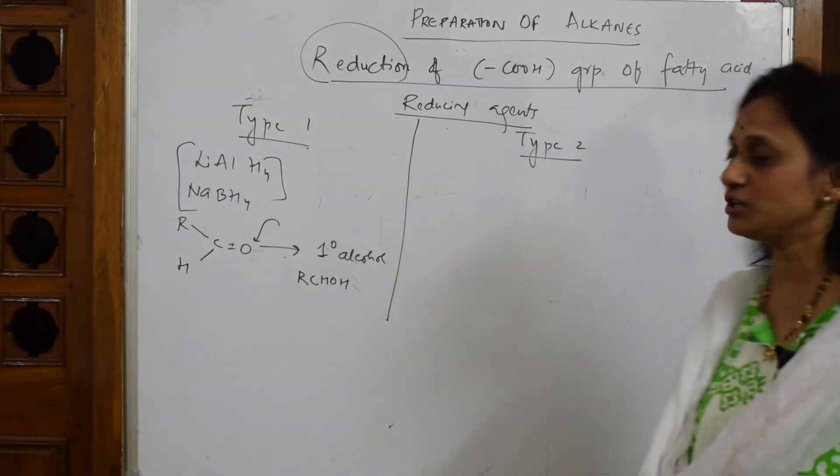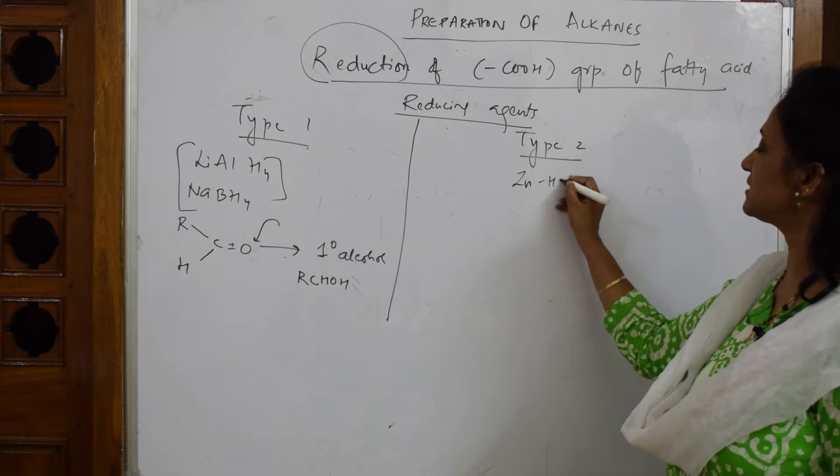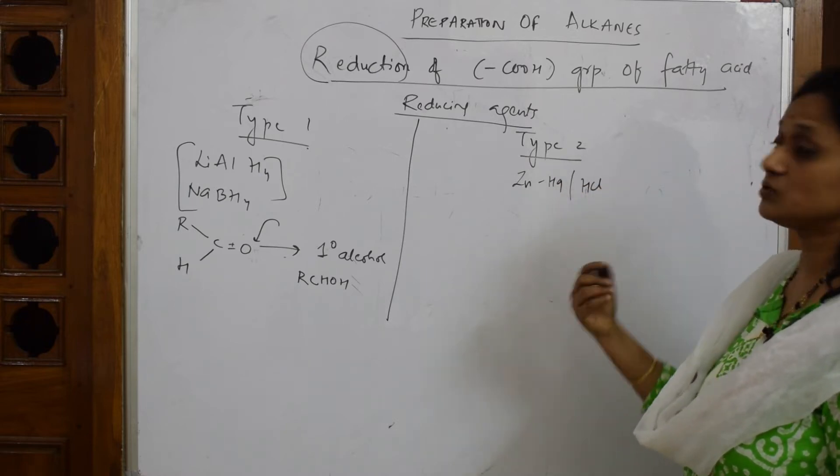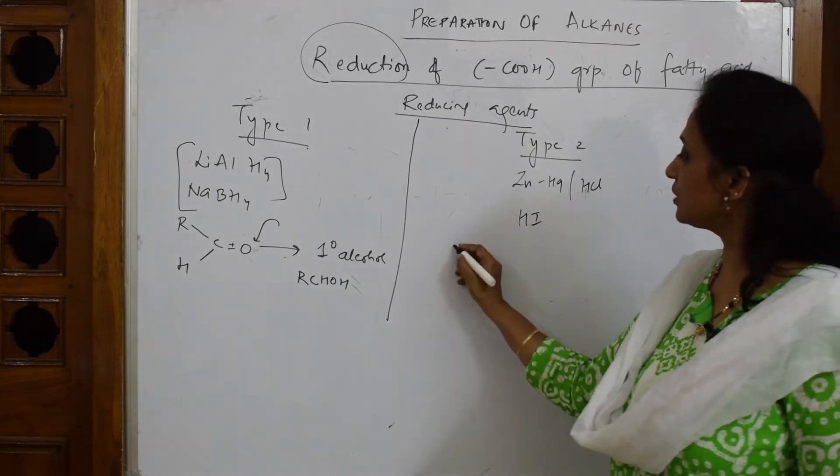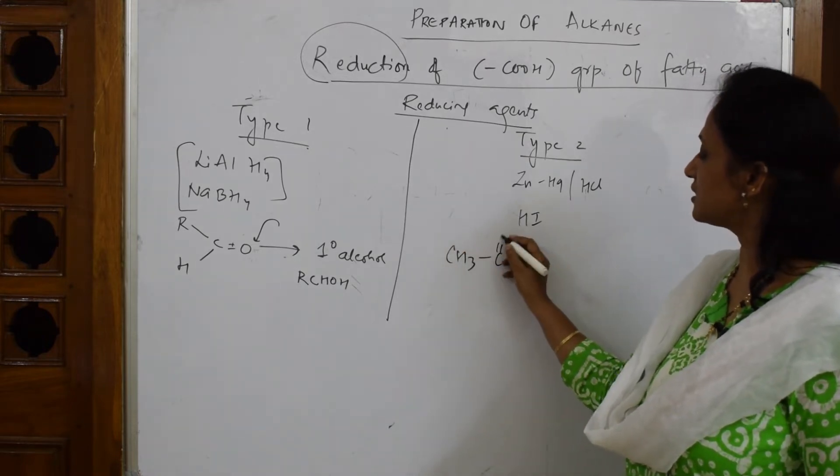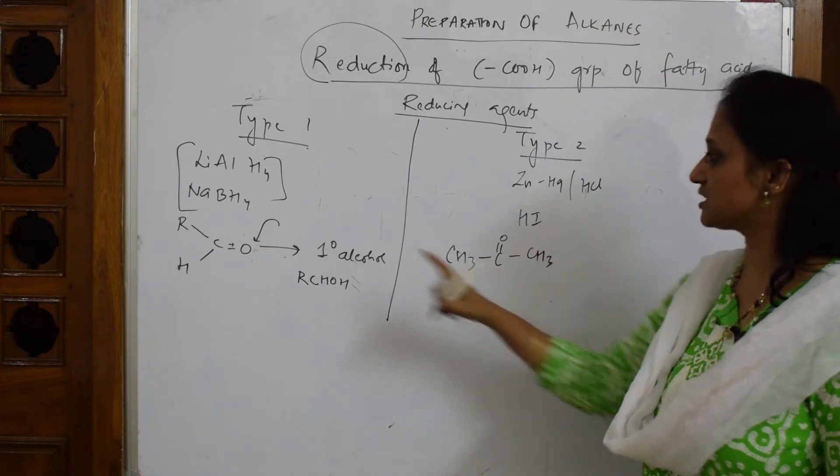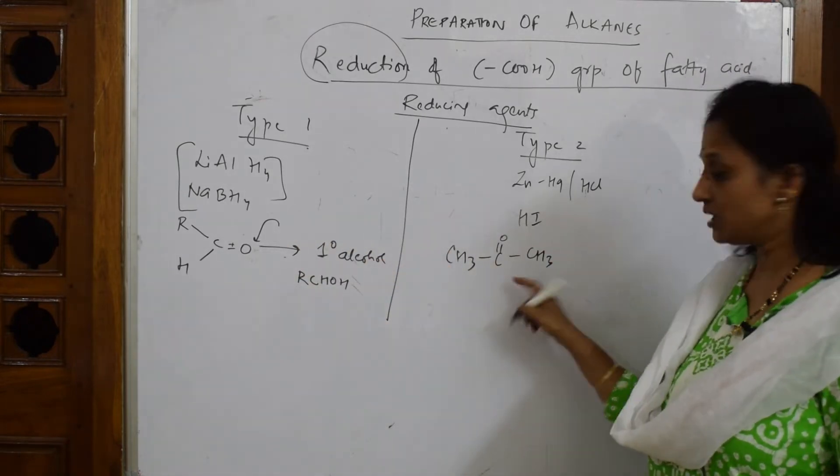Suppose if we go with the second category of reducing agents like zinc amalgam HCl or when you take reducing agents like HI, what do they do? They're going to convert ketones.